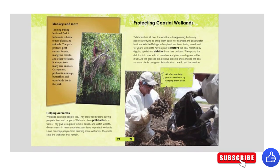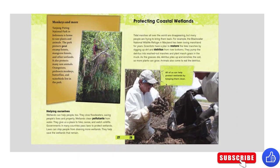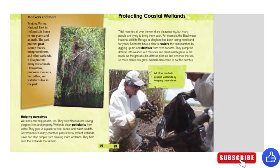We're learning so much about wetlands! Tanjung Puting National Park in Indonesia is home to rare plants and animals. The park protects peat swamp forest, mangrove forest, and other wetlands, and also protects many rare animals: orangutans, proboscis monkeys, butterflies, and water birds live in the park.